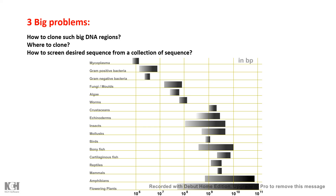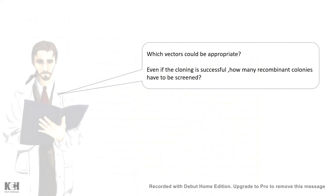Scientists were always concerned that, first, we should understand what vector to use; second, even if the cloning is successful, we should devise an efficient strategy; and before that, we should have an estimate of how many recombinant colonies we have to screen. These were the challenges of that era.